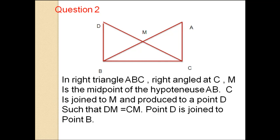Question number 2. In right triangle ABC, right angle at C, M is the midpoint of the hypotenuse AB. C is joined to M and produced to a point D such that DM equals CM. Point D is joined to point B.